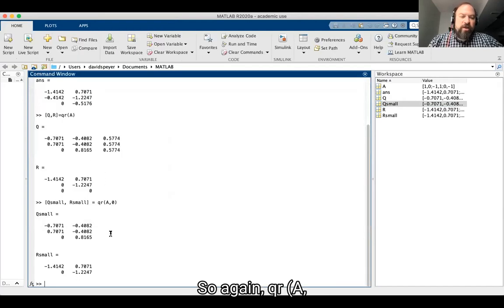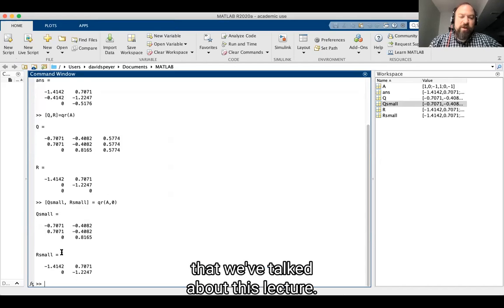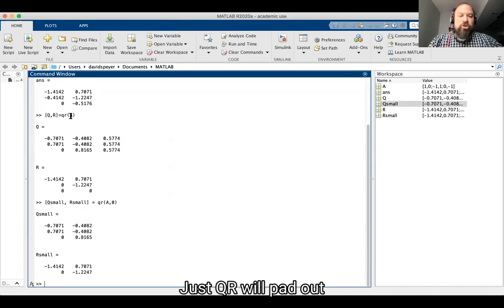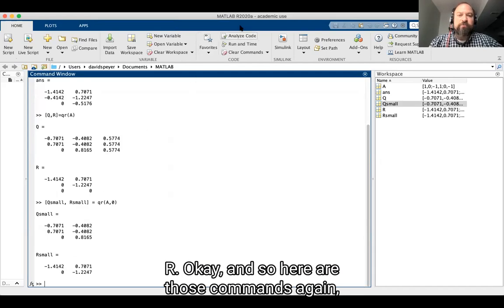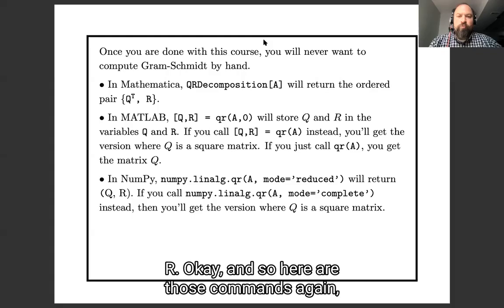So again, QR A comma zero will compute the things I've been talking about in this lecture. Just QR will pad out the Q matrix with extra columns and put extra zeros on the end of R.